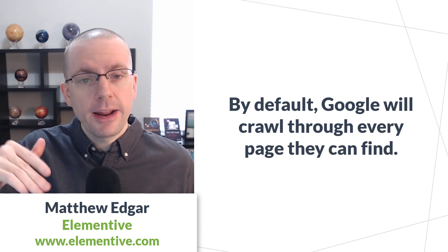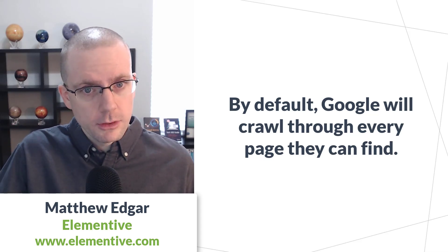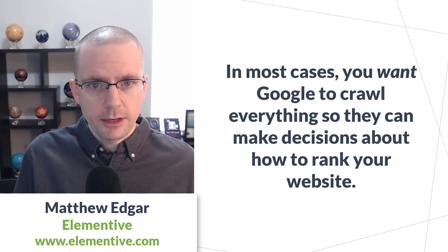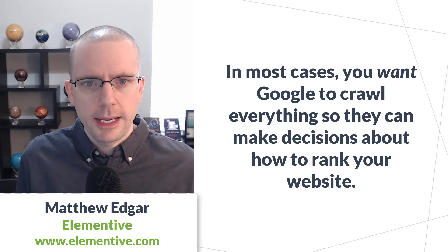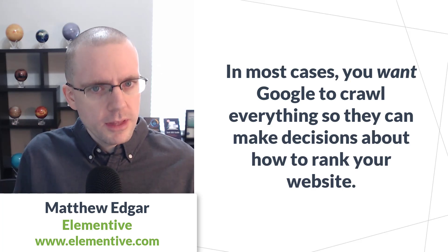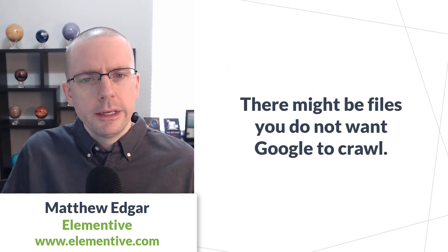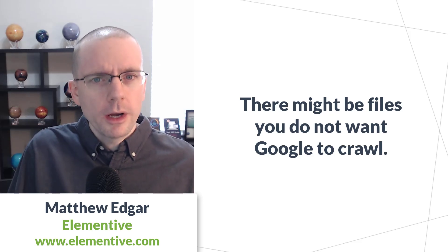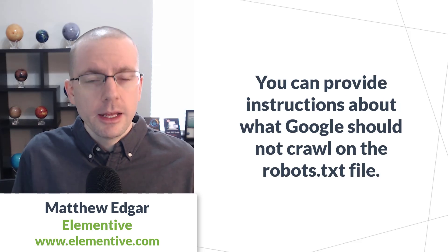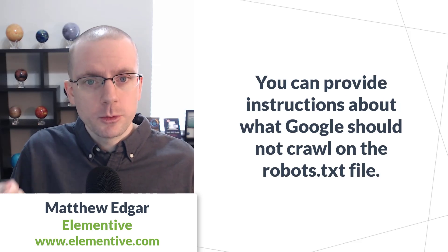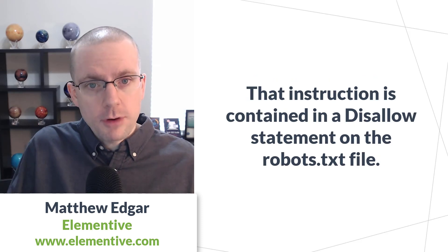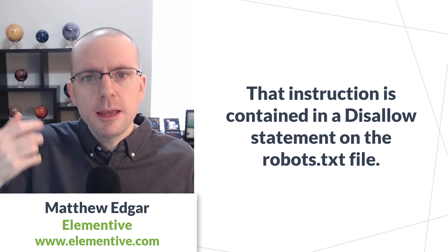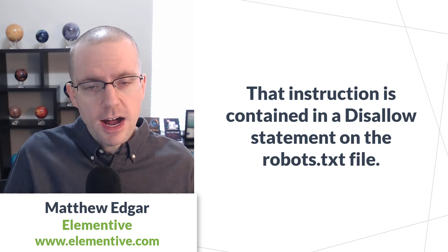That way they can make decisions about how to rank your website in search results. Normally you're going to want Google to crawl everything they can find on your website, but there may be a few things you do not want Google to crawl. If you do not want Google to crawl a particular file, you can provide an instruction on your robots.txt file in the form of a disallow statement — disallowing the robot from being able to crawl that particular file.